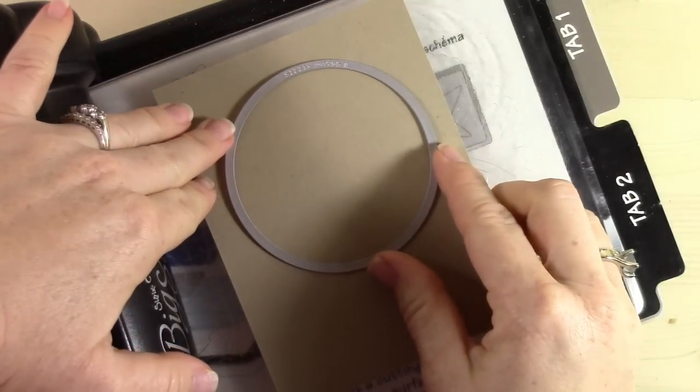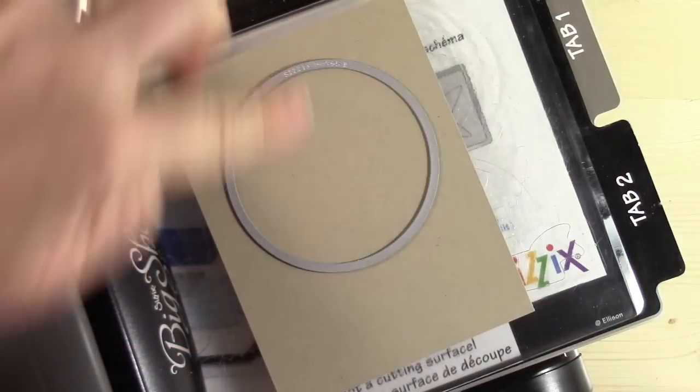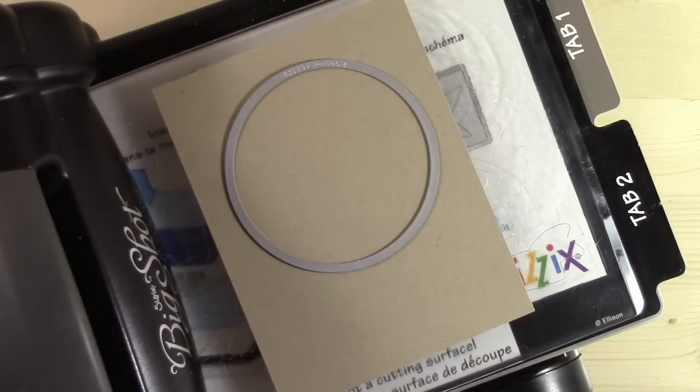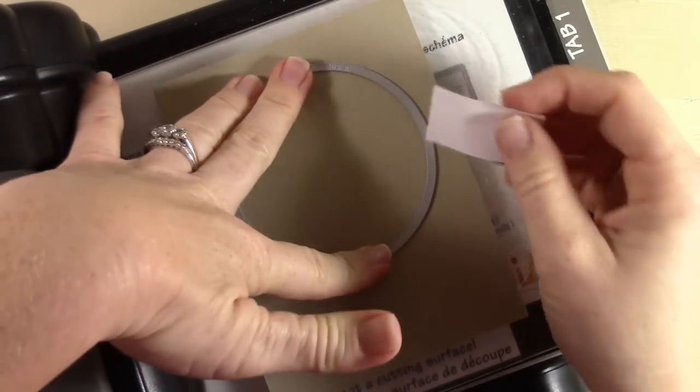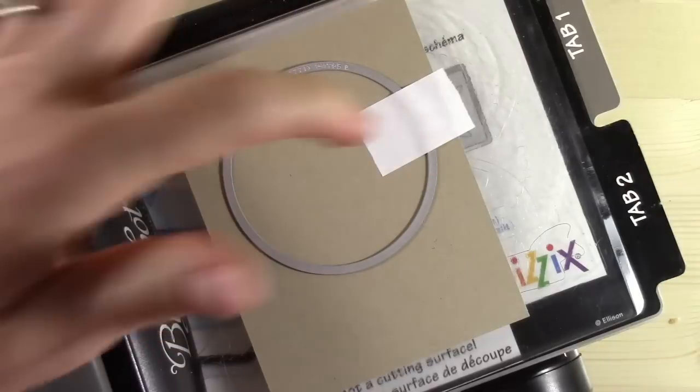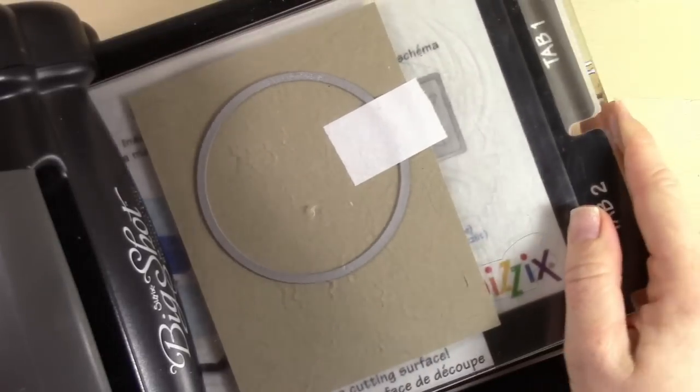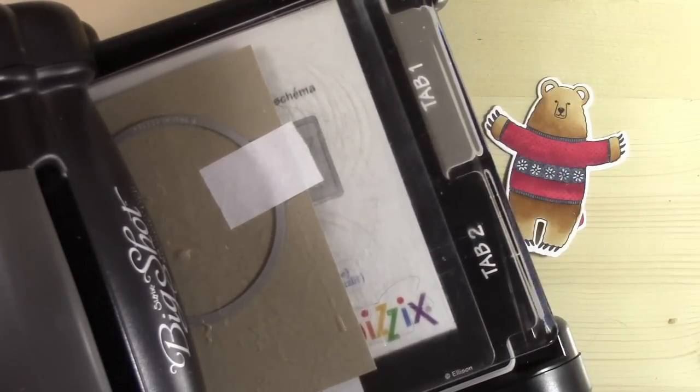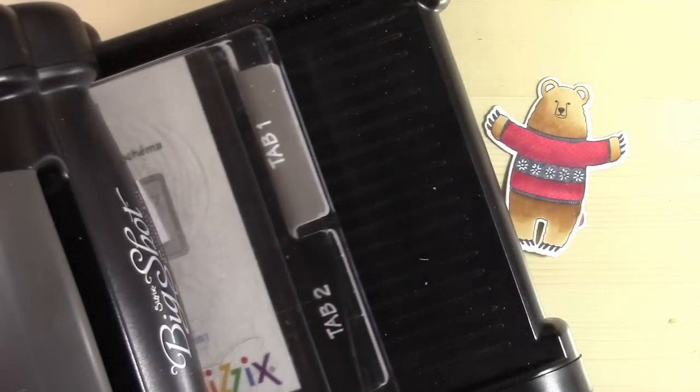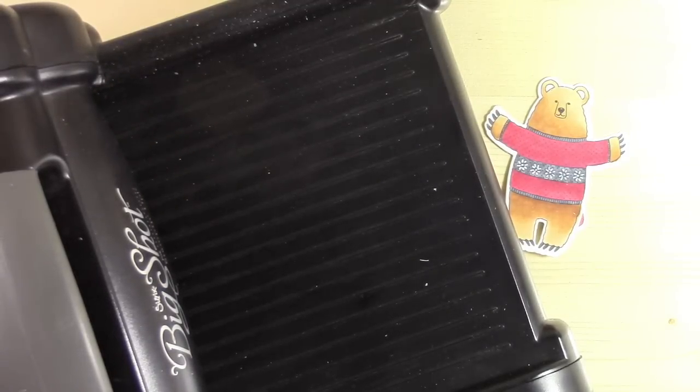I'm gonna use my Layering Circle framelits and I'm gonna place the largest circle about half an inch from the top. I'm gonna use my Post-it Note tape and tape this down in place and just run this through. You may notice the last few days my videos have been live while I have recorded them.